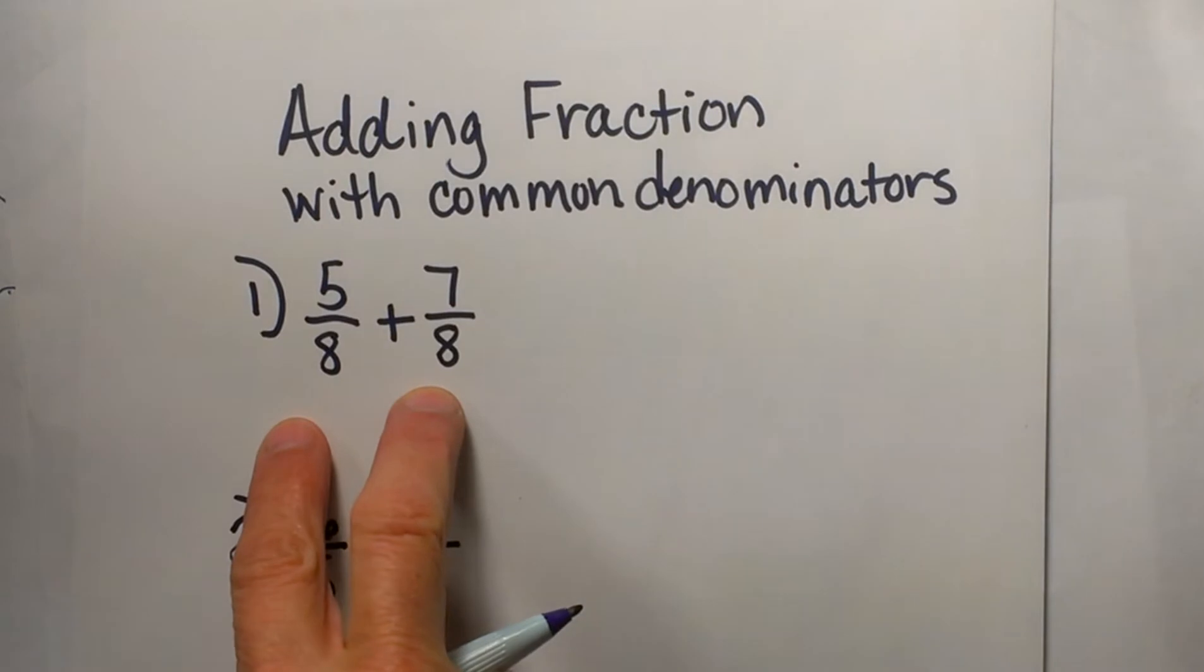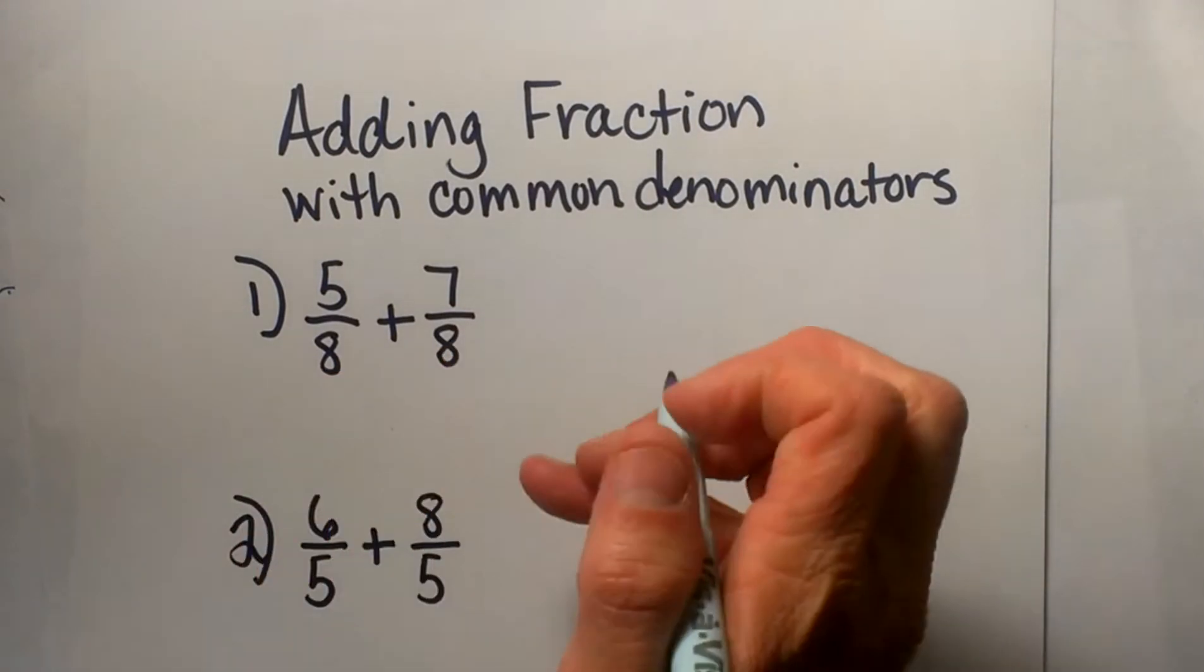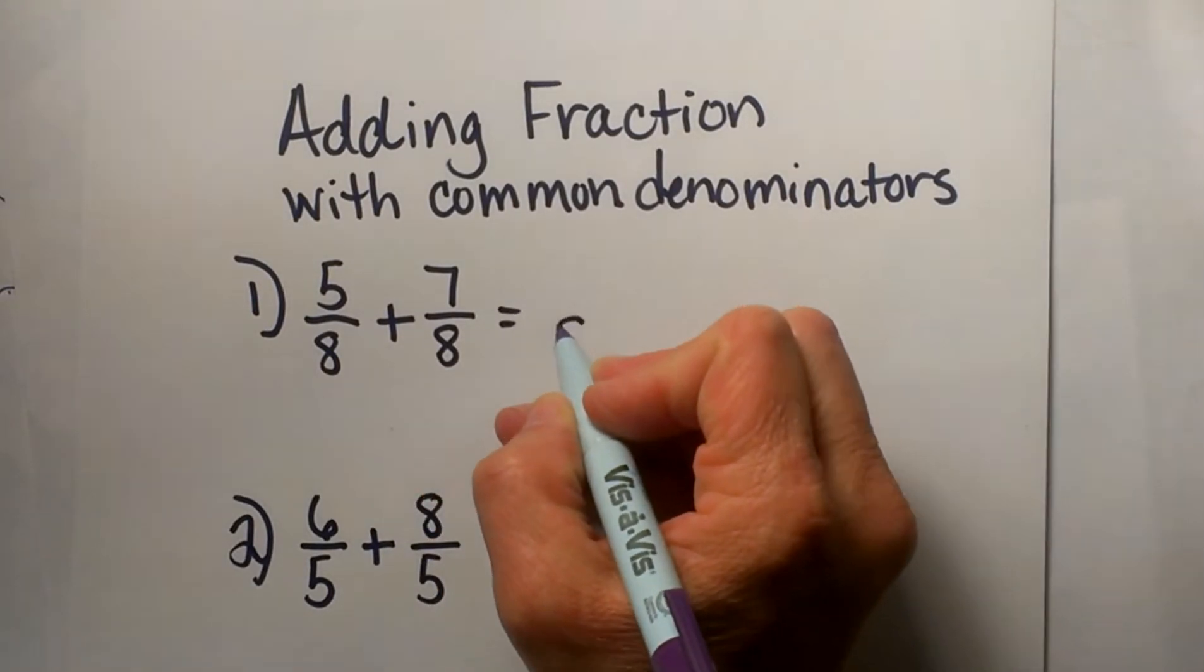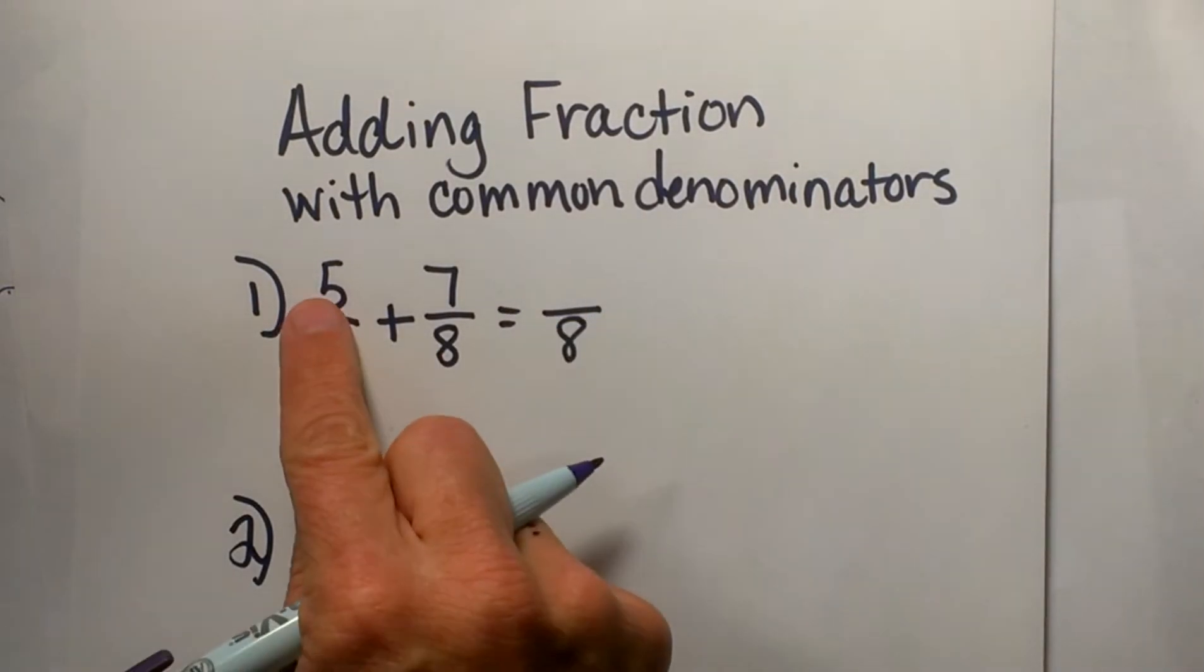When you are adding fractions and they have common denominators, it is very simple. You keep the common denominator as it is.